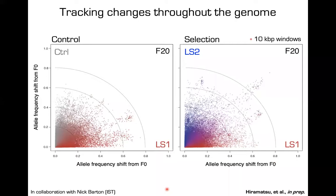What you're seeing is a time lapse of the selection experiment, with many 10 KB windows showing how gene frequency changes across the genome over 20 generations. Even though the phenotypic response is rapid and fast, if you look at the comparison between the control line and selection line 1, you'd be hard-pressed to tell the difference — this is a highly polygenic response. Only very few loci show strong signals — these are hitchhiking loci dragged along. But with two selection lines, we can identify loci changing in parallel.